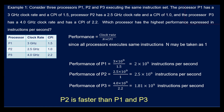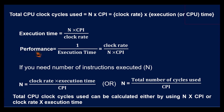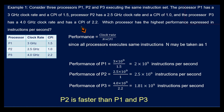Now which formula do we have to use? The clock rate is given and CPI is given, so we need to calculate the performance. Performance = clock rate / (N × CPI). Clock rate and CPI are available, but N is not given directly. However, since the same instruction set is executed by all three processors, N is the same in all three cases, so N may be taken as 1. Therefore, performance = clock rate / CPI.